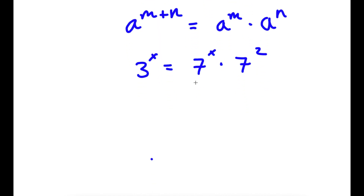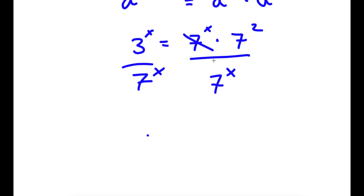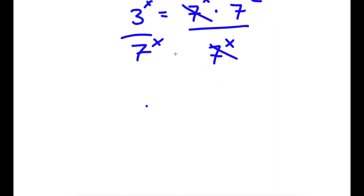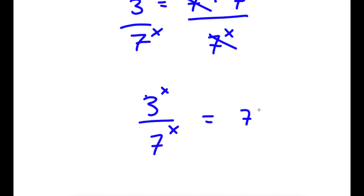Now I'm going to go ahead and divide both sides by 7 to the power of x. These two cancel out, and now I'm left with 3 to the power of x over 7 to the power of x is equal to 7 squared.